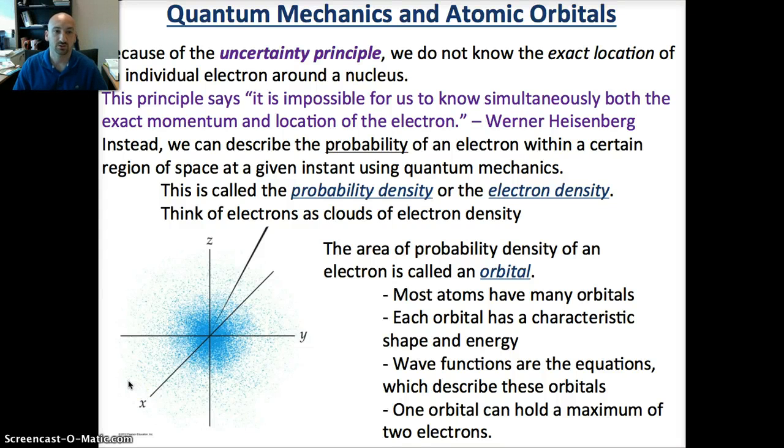Welcome back to Chapter 6, Part 2 of Module 7. We're going to turn to quantum mechanics and atomic orbitals. We'll start with the Uncertainty Principle, which says it's impossible for us to know simultaneously both the momentum and the location of the electron.